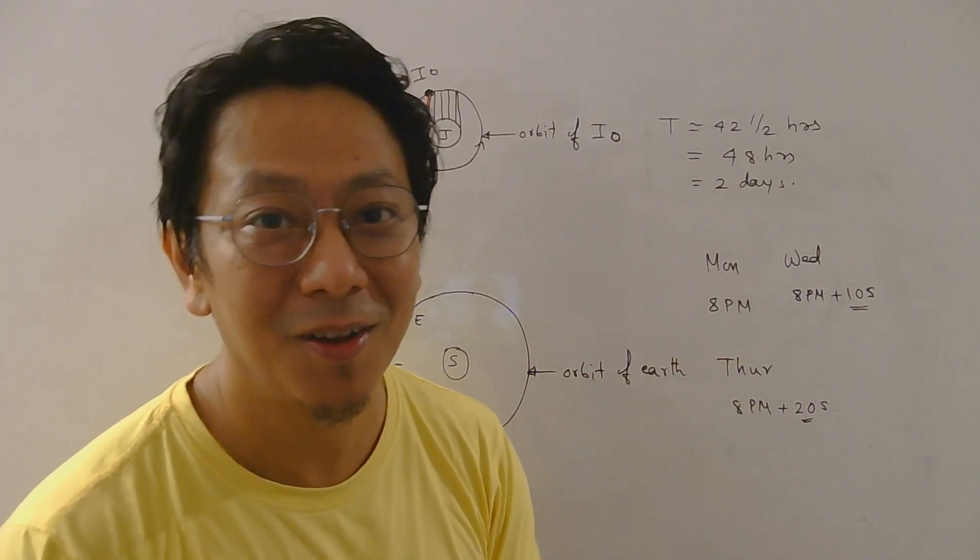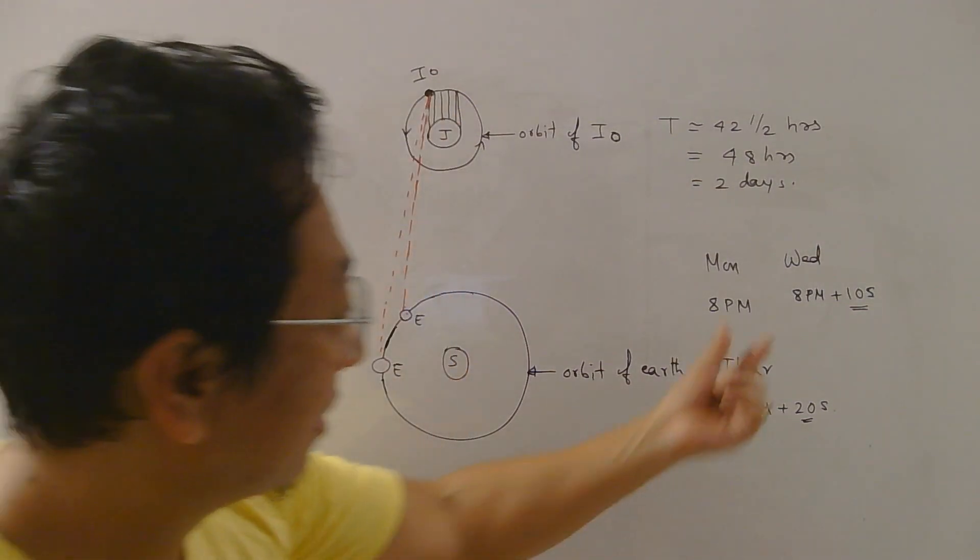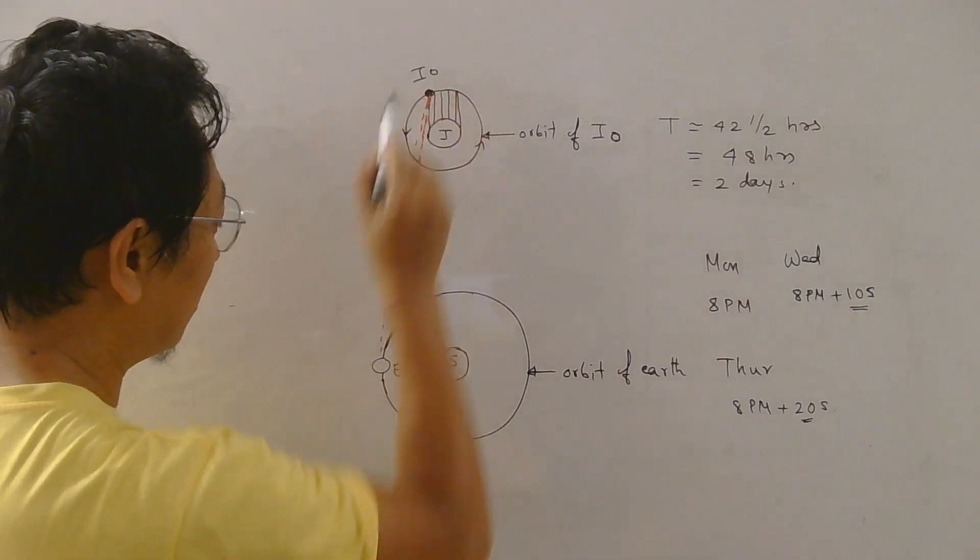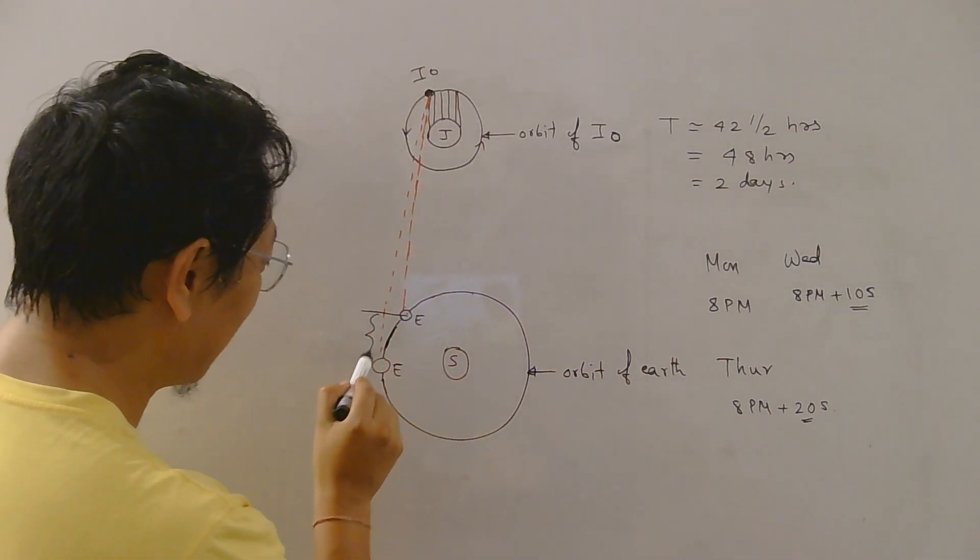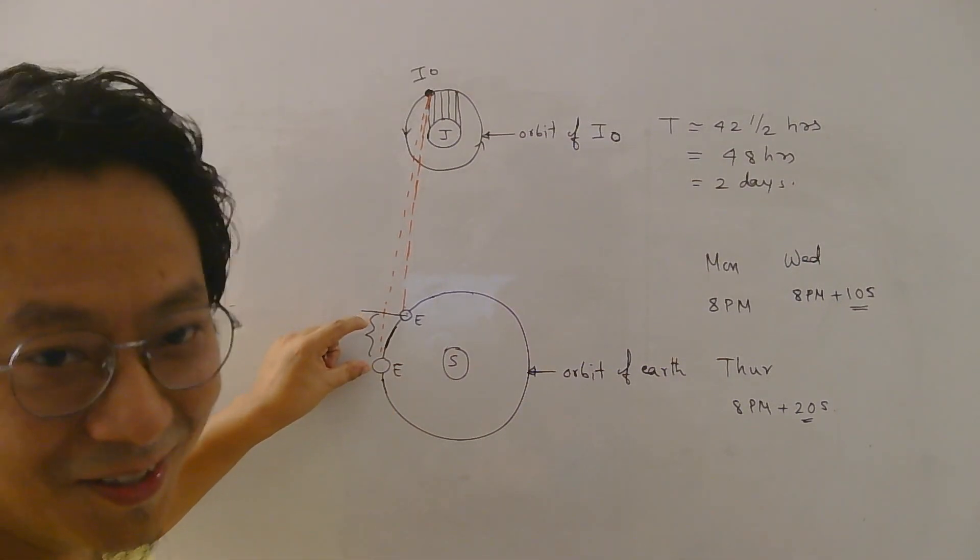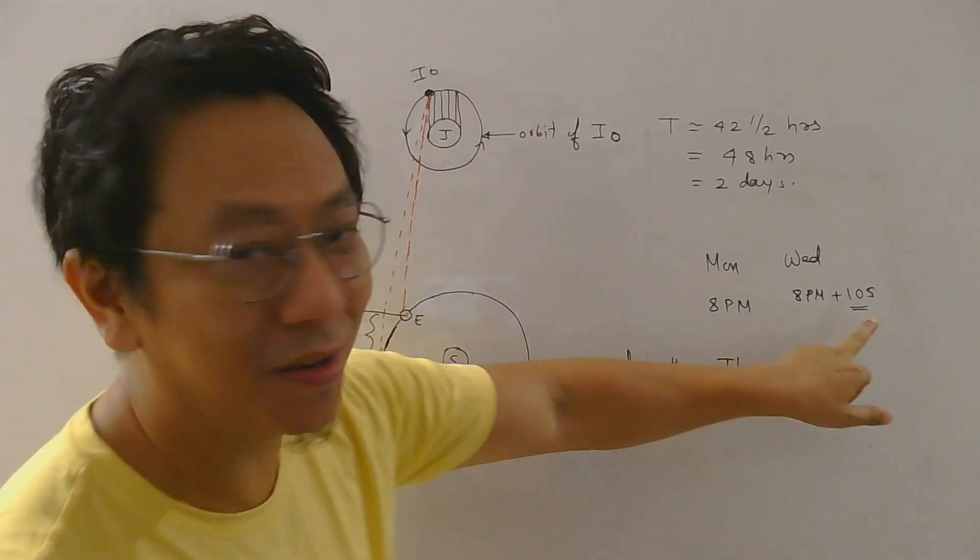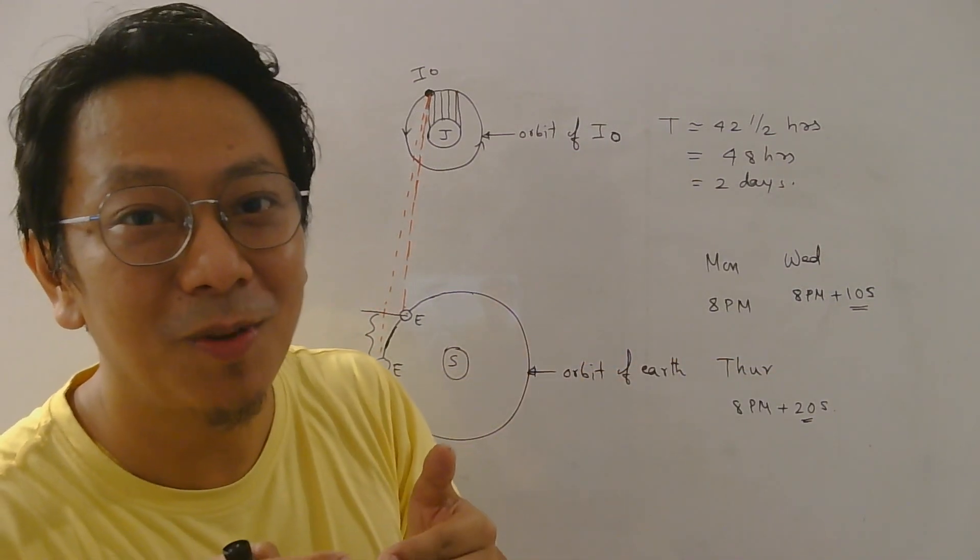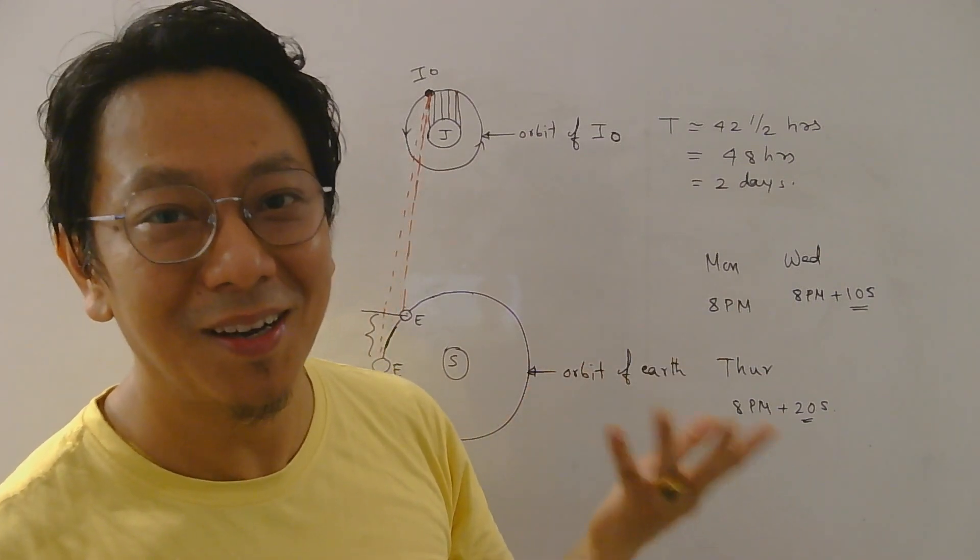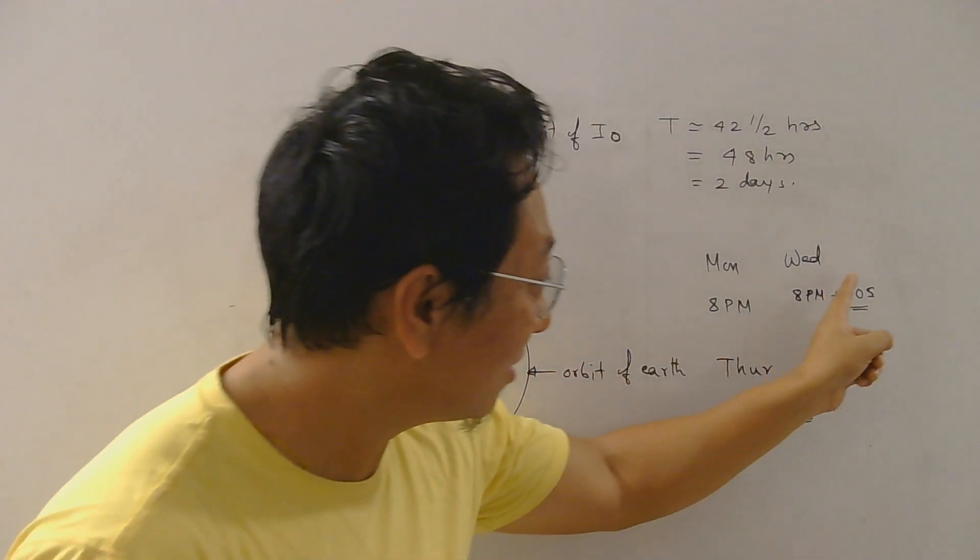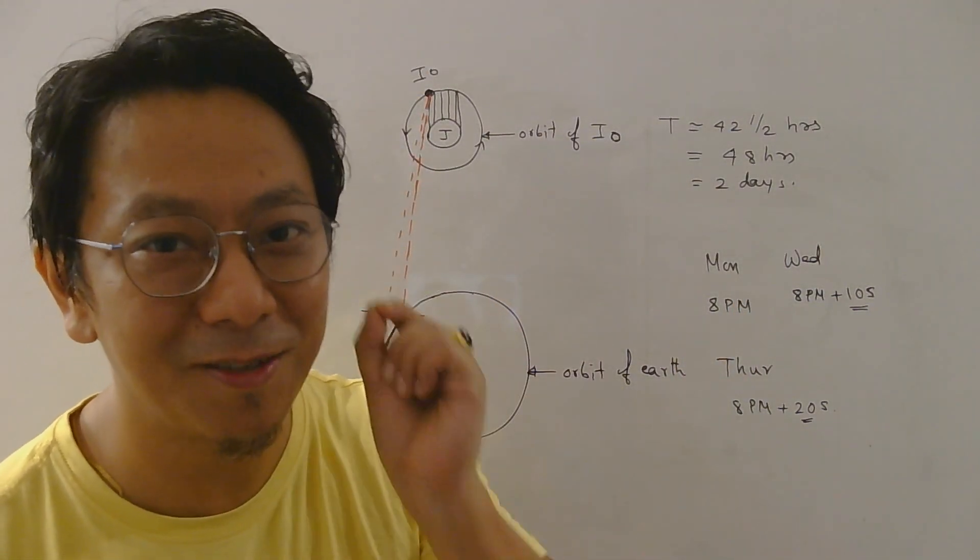So why this delay happened? Then Romer understood that the speed of light cannot be infinite. So the delay happened because after one revolution when earth reaches here, the light has to travel, you can see, this much extra distance. And to travel that extra distance it took some time. And why it took time? Because it is not travelling with infinite speed. If it was travelling with infinite speed it would not have taken any time. But since it took time to cover this extra distance, it is very clear that light has a finite speed.